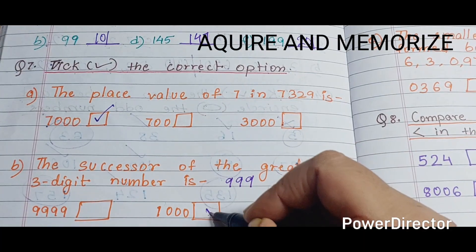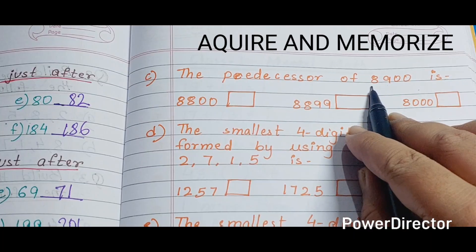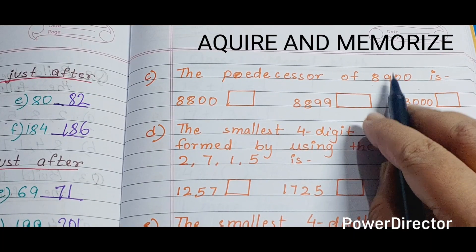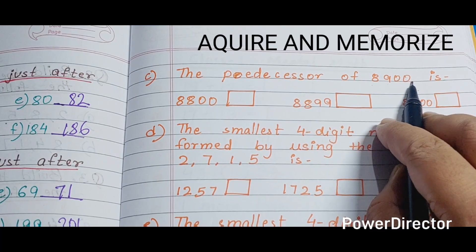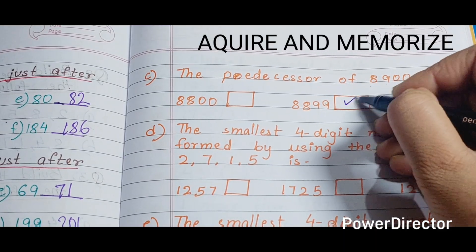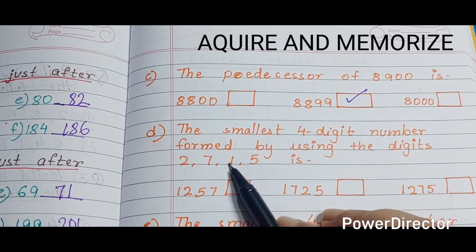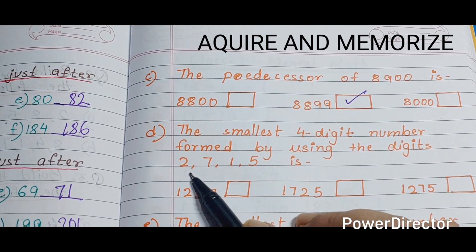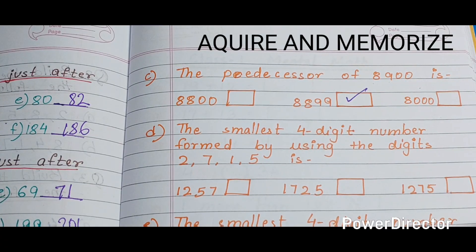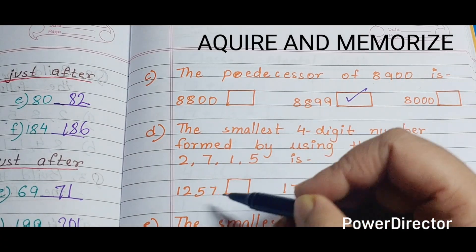The predecessor of 8900 — we need the number just before 8900, which is 8899. Next: the smallest four-digit number formed using digits 2, 7, 1, 5. The smallest four-digit number we can make with these digits is 1257.